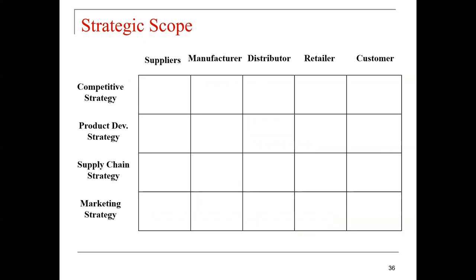The strategic scope must cover all boxes shown in this slide. At the top, we have the suppliers, the manufacturer, the distributor, the retailer, and the customer. On the axes, we have the Competitive Strategy, Product Development Strategy, the Supply Chain Strategy, and the Marketing Strategy. Each stage must have fit across all boxes, and supply chain strategies spanning all players. This fit allows the countering of multiple owners and suppliers, and helps avoid local optimization.